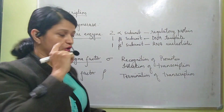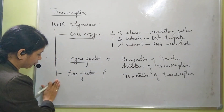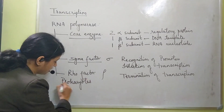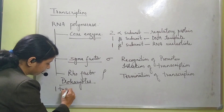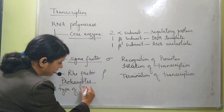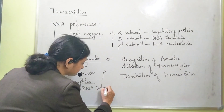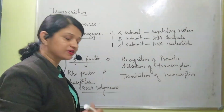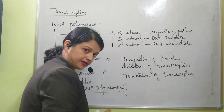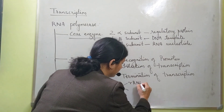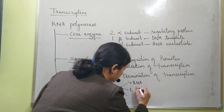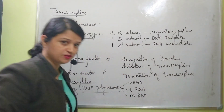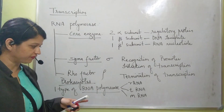In prokaryotes, there is only one type of RNA polymerase. This single RNA polymerase will transcribe all three types of RNA: rRNA (ribosomal RNA), tRNA (transfer RNA), and mRNA (messenger RNA).